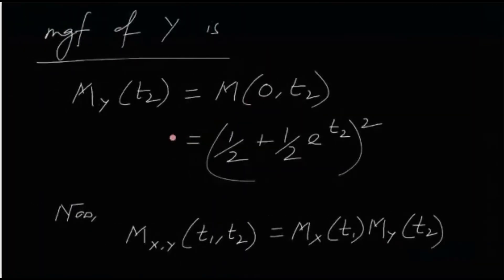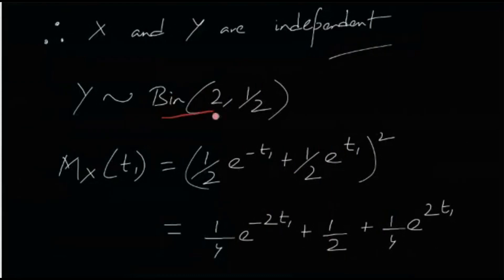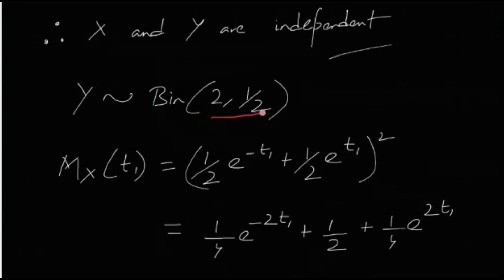From the MGF of Y we can see that Y follows a Binomial(2, 1/2) distribution. We have already found the distribution of Y — we know it's binomial and we know the parameters: n=2 and p=1/2. Now for X, its MGF does not look like a familiar one.